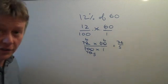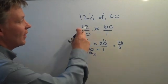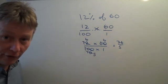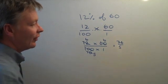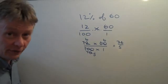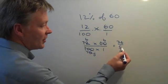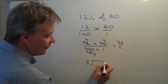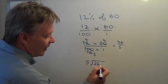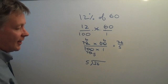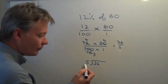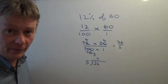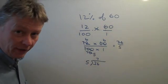So my fraction now is 6 times 6, which is 36, divided by 5 times 1, which is 5. So the fraction calculated from 12% of 60 is 36 divided by 5. I can also write this as a short division — how many lots of 5 are there in 36? Well, 7 times 5 is 35, so I've got a remainder of 1.